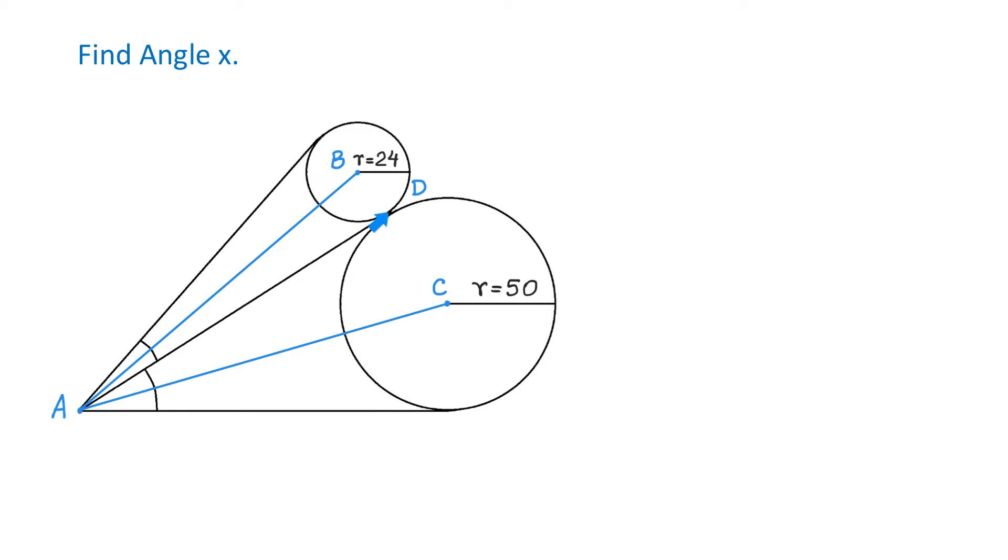In this smaller circle, if these two are tangents to this circle, then the line AB bisects the angle of 17 degrees. Each of these angles will measure 8.5 degrees because 17 divided by 2 is 8.5. The same with the larger circle: the line AC will bisect angle x, and each of these angles will measure x over 2.